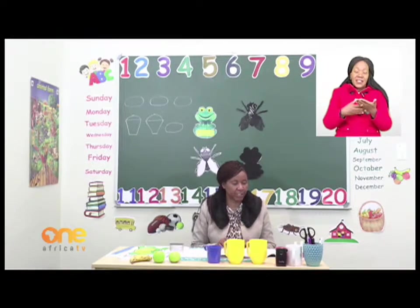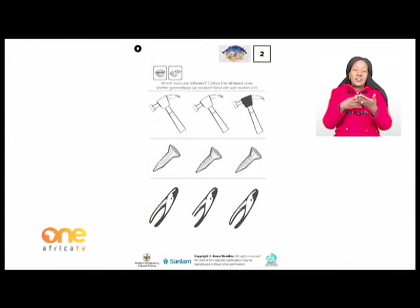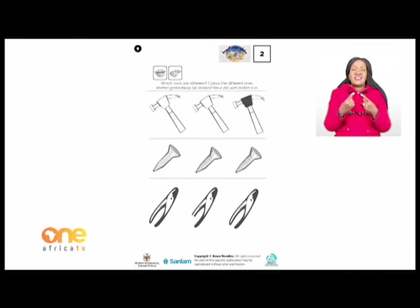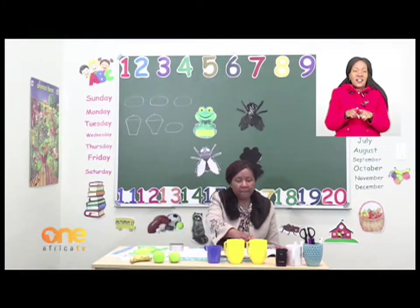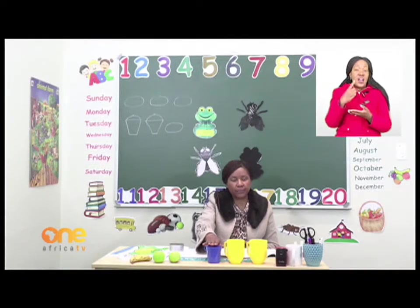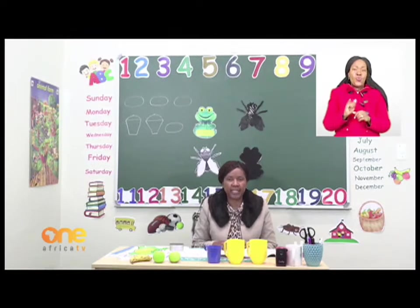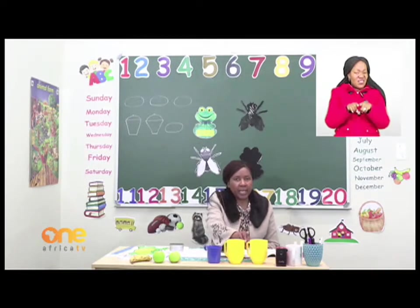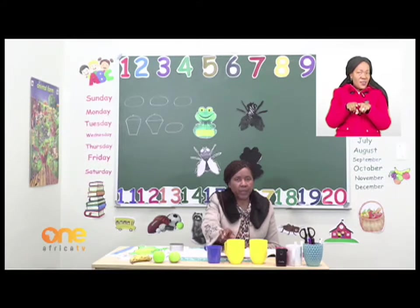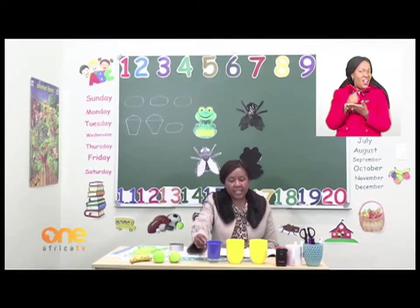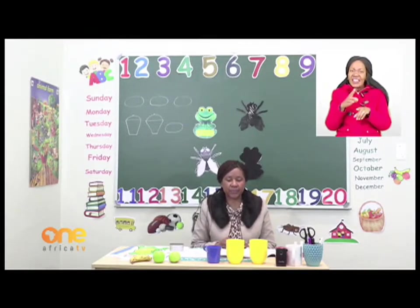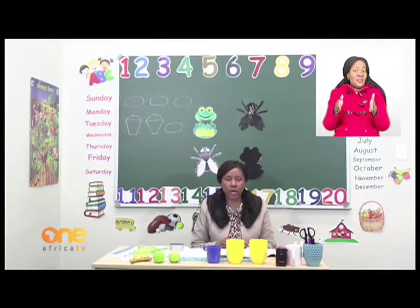Let's turn to page eight. On page eight it says: which tools are different? Let's look at the objects on my table. We would like to understand what the word 'different' means. Look at these cups — there are two yellow cups and one blue cup. Which cup is different? Different means it's not the same.